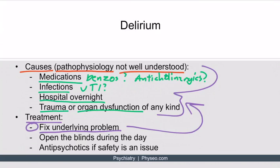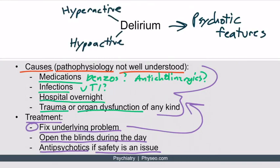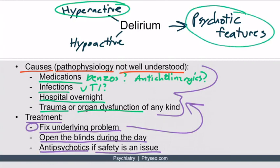While treating the underlying cause, you want to maintain the patient's sleep-wake cycle — open the blinds during the daytime, as sometimes this alone can reverse the delirium. As part of keeping the patient safe, you may need to use antipsychotics, but only if safety is a serious concern for the patient or hospital staff. In a hyperactive delirious patient with psychotic features like hallucinations, safety can easily become an issue. Remember, antipsychotics are not treating the patient — they're just keeping them safe while you treat the underlying problem.